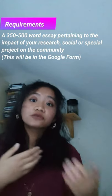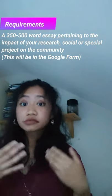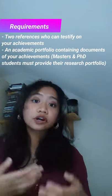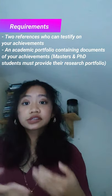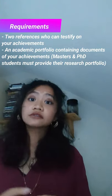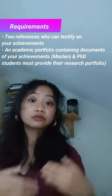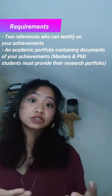To apply, you will need to provide a 350 to 500 word essay pertaining to the impact of your research, social project, or special project, or describing the effort you have done in your field of study that contributes significantly to the community. You will also need two references, an academic portfolio with supporting documents, and for masters and PhD applicants, a research portfolio.